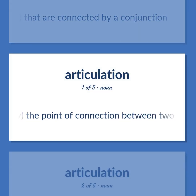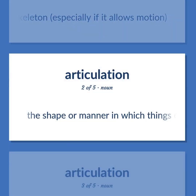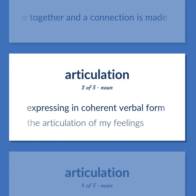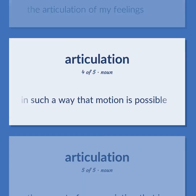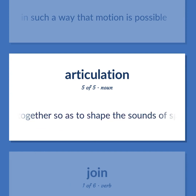Joint: Anatomy — the point of connection between two bones or elements of a skeleton, especially if it allows motion. The shape or manner in which things come together and a connection is made. Expressing in coherent verbal form. The articulation of my feelings. The act of joining things in such a way that motion is possible. The aspect of pronunciation that involves bringing articulatory organs together so as to shape the sounds of speech.